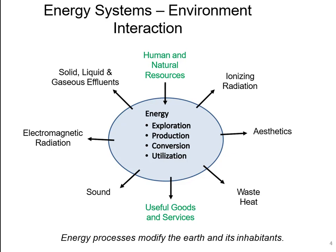In every phase there is some energy lost from the system, or byproducts released. The energy resources are the input. Exploration, production, conversion, and utilization — all four phases involve human as well as natural resource extraction. For example, in exploration, human activity is needed along with the fuel itself. In production, natural resources are used. Converting coal into electricity and then utilizing it in households or the industrial sector are examples of the full cycle.